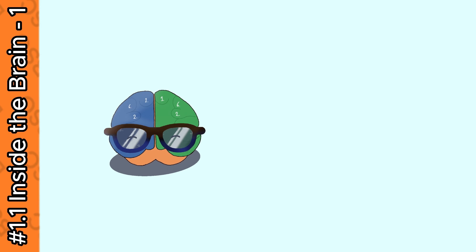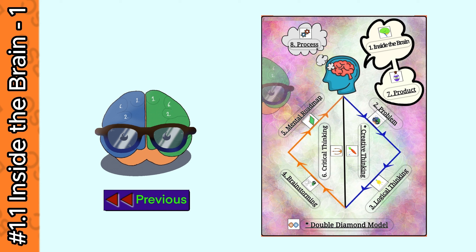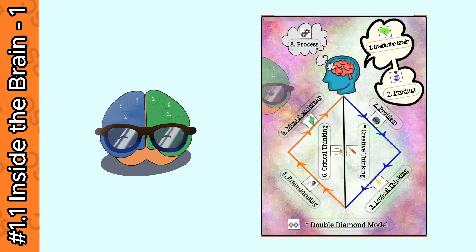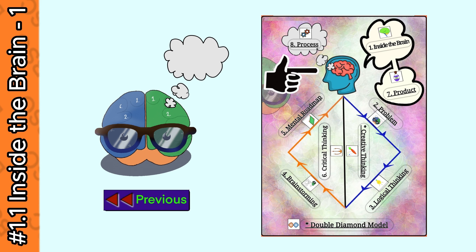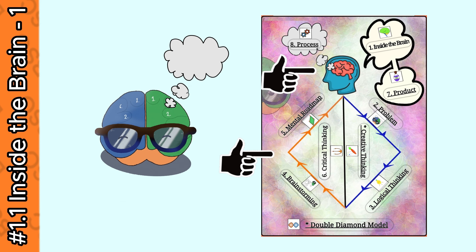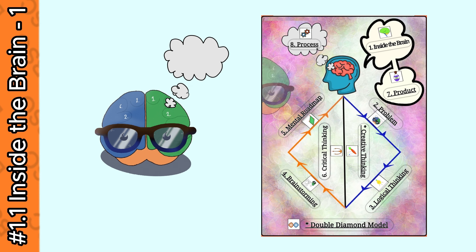In the last video, we discussed that in order to understand the idea generation process, first we must understand what happens in the human brain when we get a new idea. Once an idea is generated, we have a proven and controlled process that can be used to structure and nurture the ideas for a flawless business plan.